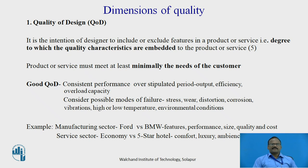For example, if you take a car: in the manufacturing sector, Ford is one company and BMW is another. What makes the difference between these two? The features of the car — performance, size, quality, and cost. The customer will choose based on their need. Both companies are satisfying the needs of the customer, but one can go for a Ford and one can go for a BMW. In the service sector, take the example of a hotel — economy versus five-star. The difference is comfort, luxury, ambiance, and service. Good quality of design in both the manufacturing and service sectors basically aims to satisfy the customer.